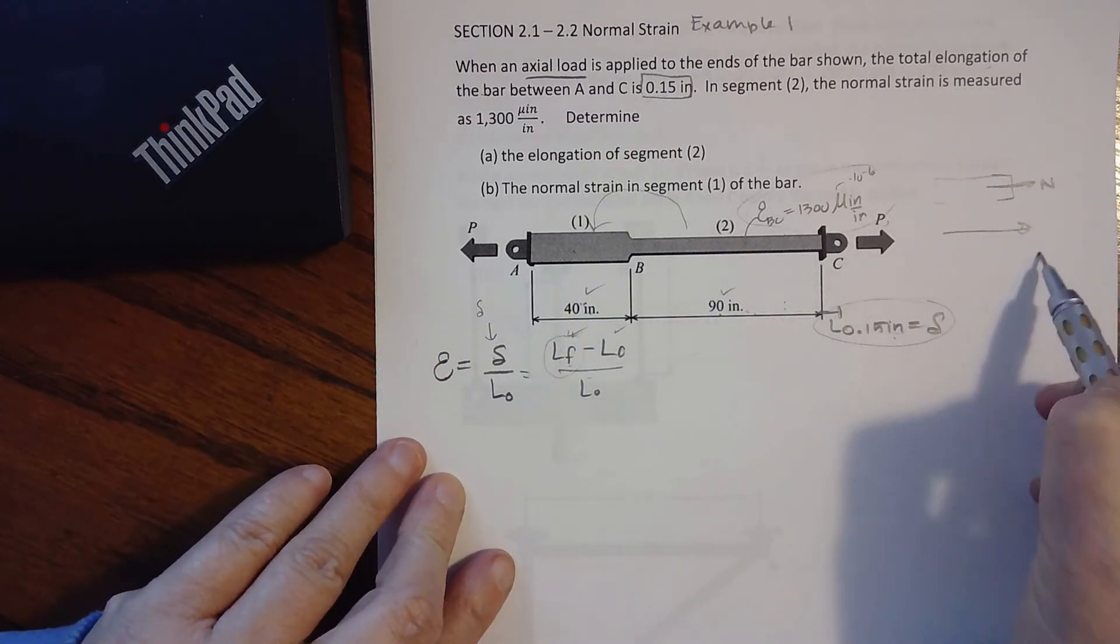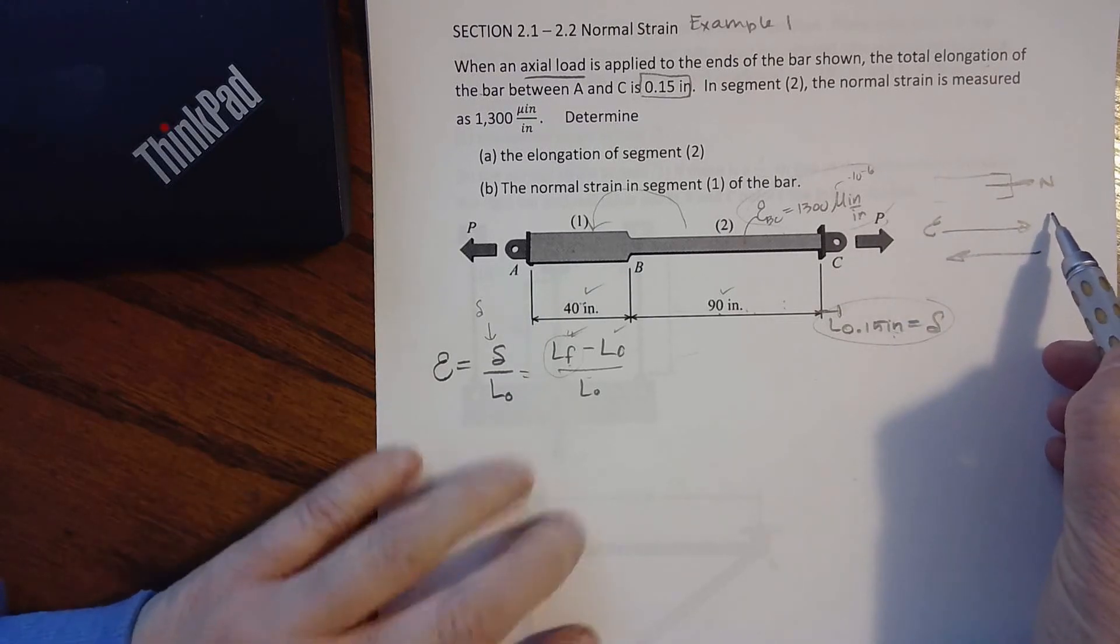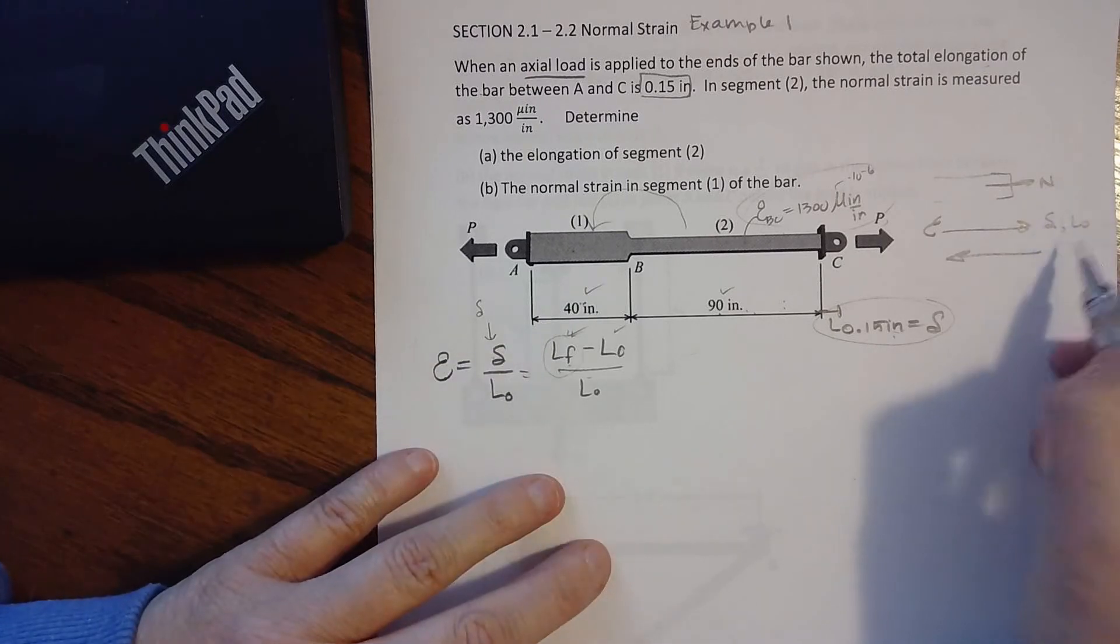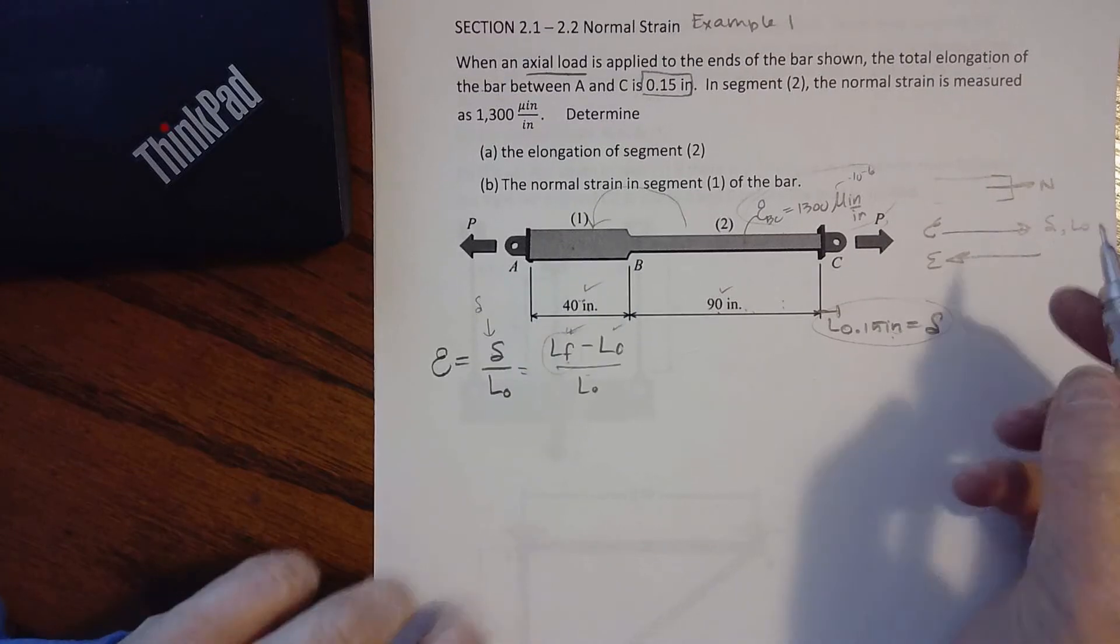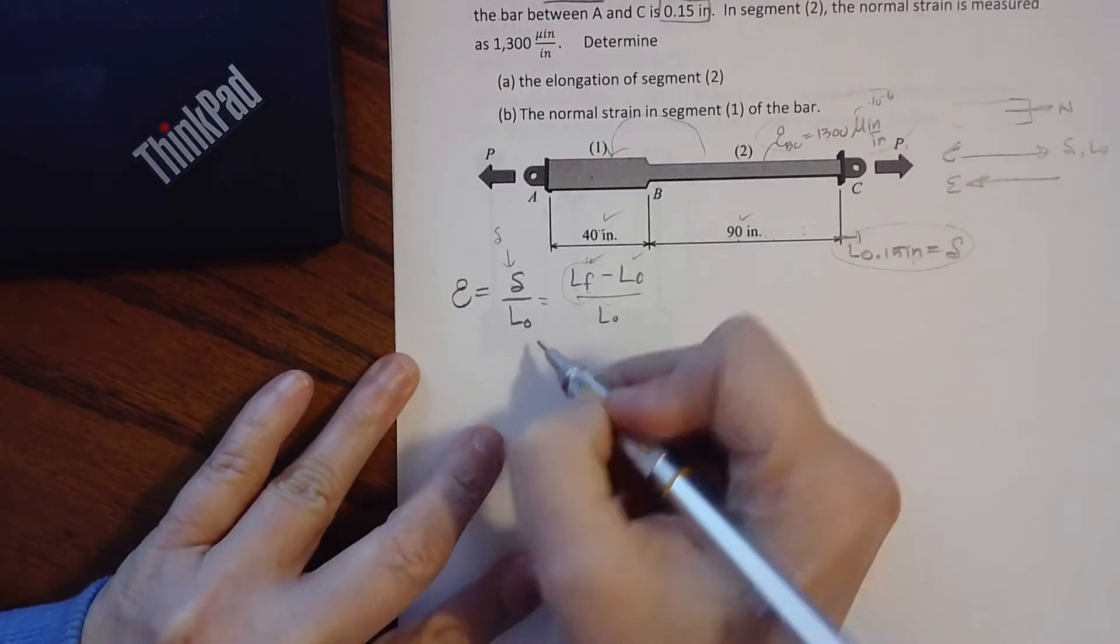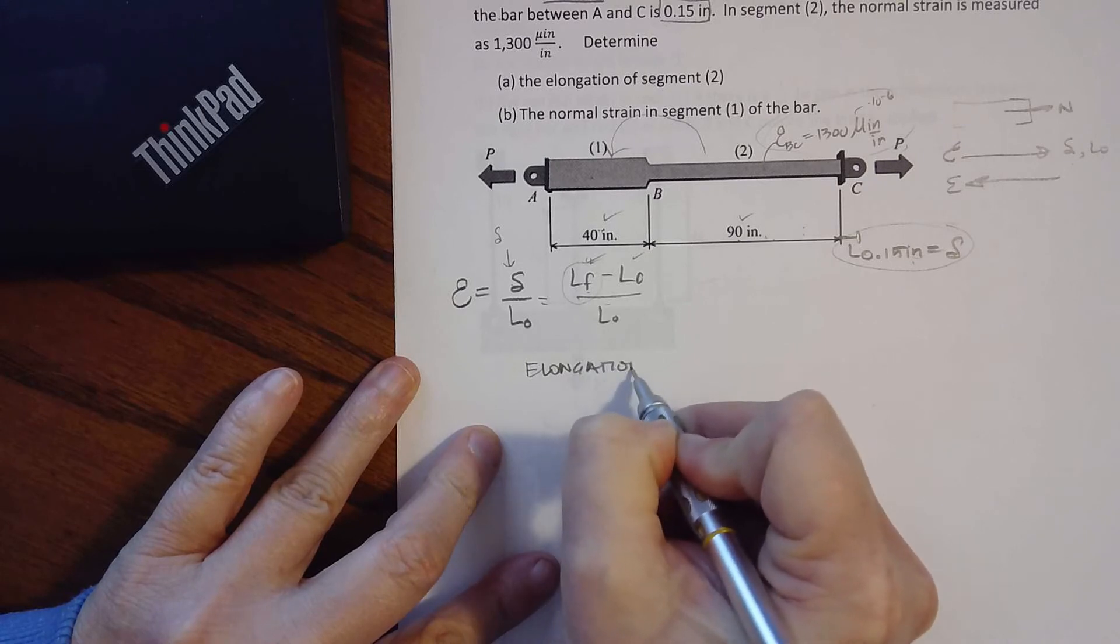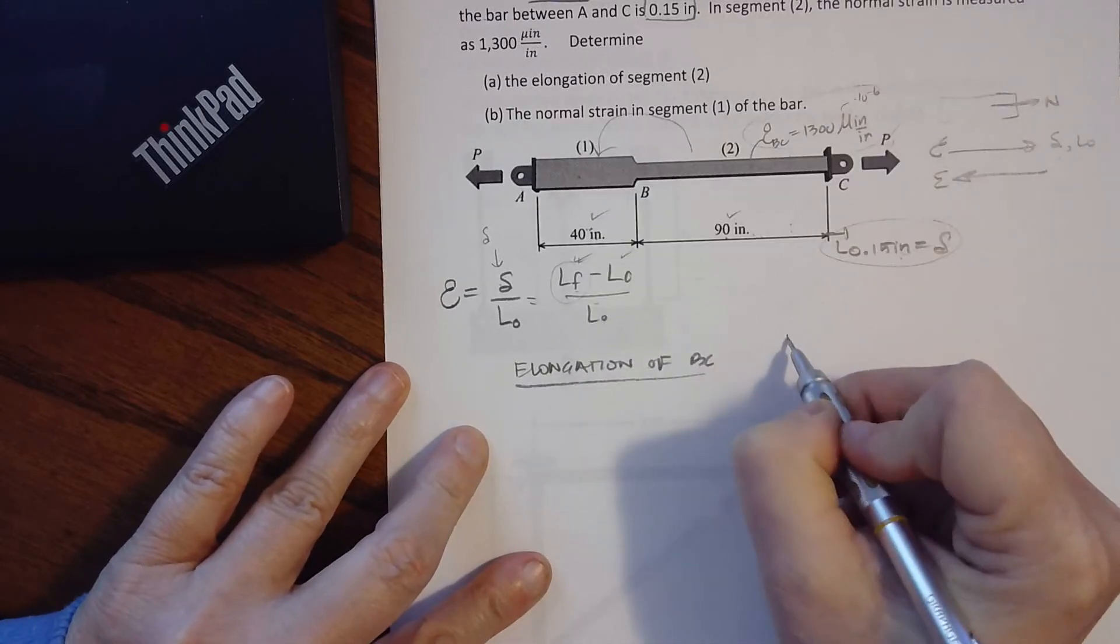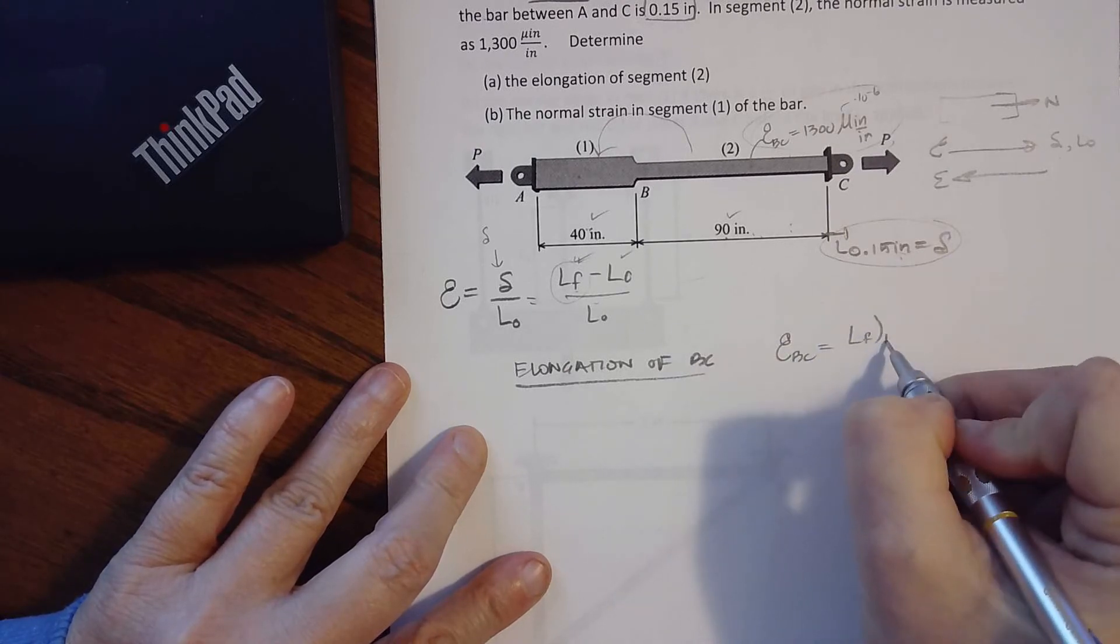Here I will have the final length, the original, the original this segment, and back calculate the strain. So that's what I'm saying - you have to learn how to work forwards and backwards. You might be given strain, go back and figure out delta or original length. You might be given this stuff, find the strain. So let's start with elongation.